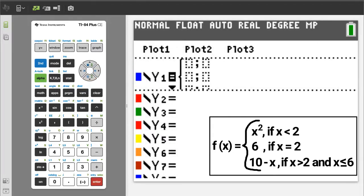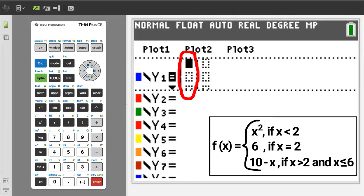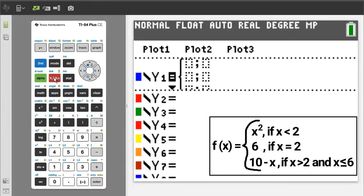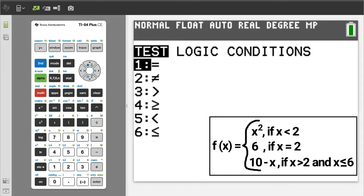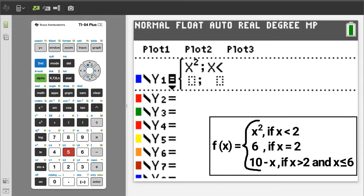We have three boxes on the left, followed by semicolons, and three boxes on the right. The boxes on the left, we will input this information, and the three boxes on the right, we will input this information. The first box we put x squared. The x is here, and the square button is here. Now right arrow to the next box over. Here, we will enter x is less than 2. To get the less than sign, press the second button, then the math button, which is also the test button. Less than is number 5, so press the 5 button. Now enter a 2.